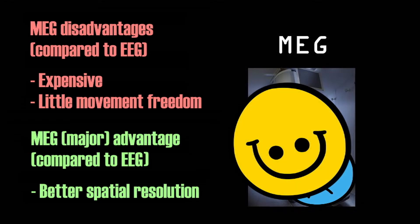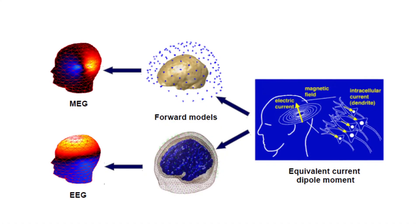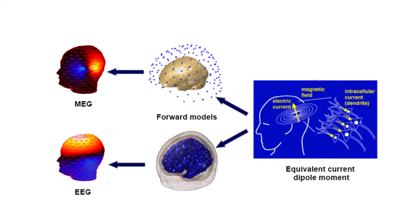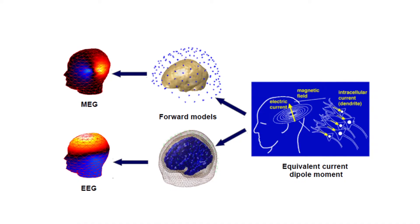Electrical signals picked up by EEG are distorted by cerebrospinal fluid and the skull. This means that the ability to find where a signal comes from is extremely difficult and very imprecise with EEG. With MEG, however, the spatial resolution is much better, since magnetic fields are not distorted by the skull.